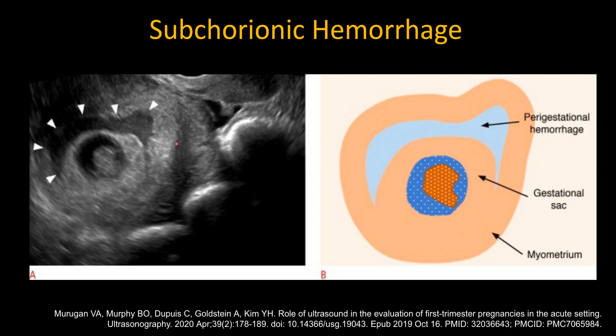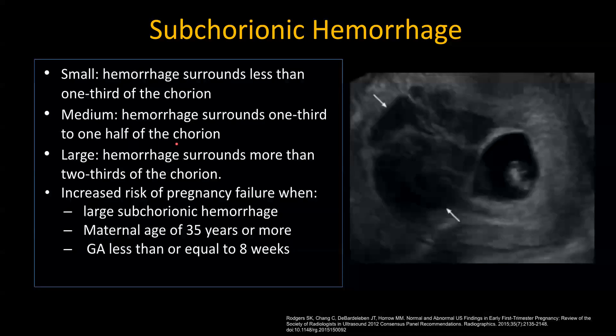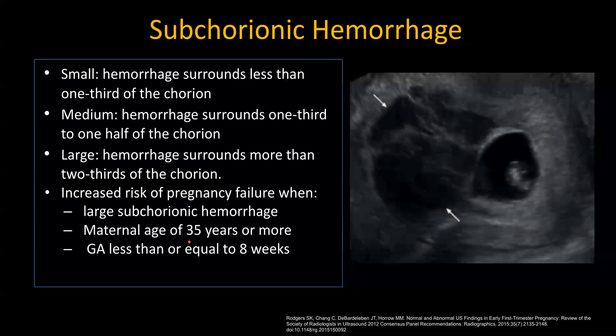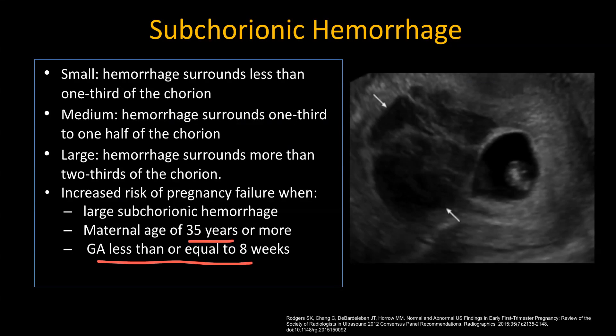Subchorionic hemorrhage is a common incidental finding on early pregnancy scans. In most cases it's going to be small. When it's more than two-thirds, we call it large, and that is a sign of poor prognosis. Other signs include a large peri-gestational hemorrhage in a patient who is more than 35 years of age and the gestational age is less than eight weeks — these are also factors that would suggest poor prognosis.